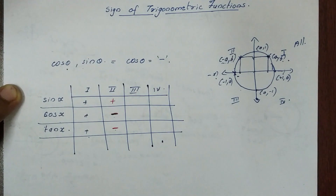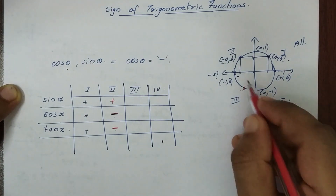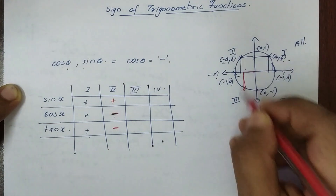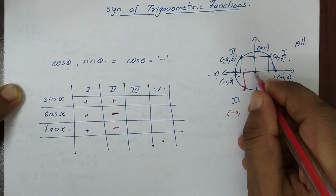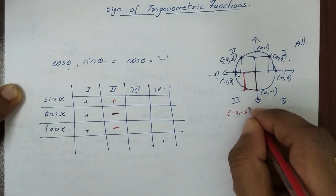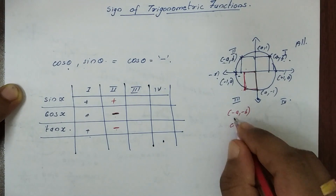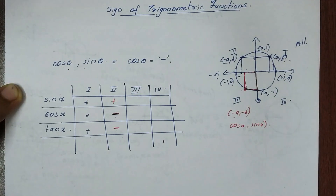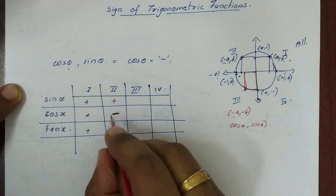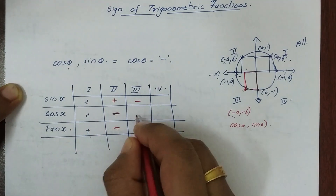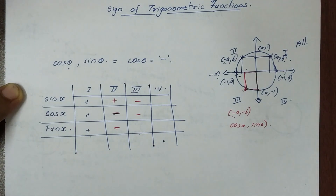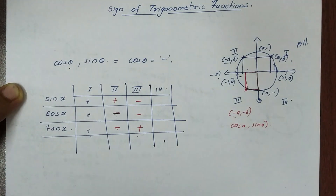Now let's take the third quadrant. I have a point in the third quadrant, then the coordinates: x is minus a, and y is minus b. So cos theta is minus, sin theta is minus. Then in the third quadrant, sin is minus divided by minus, that is plus. So tan is positive.